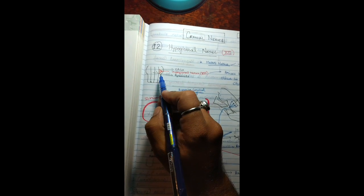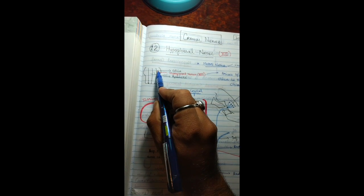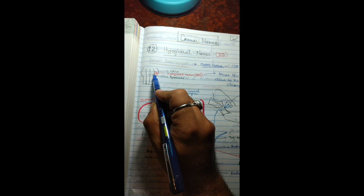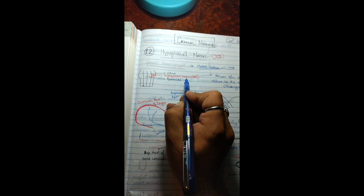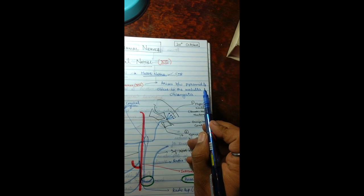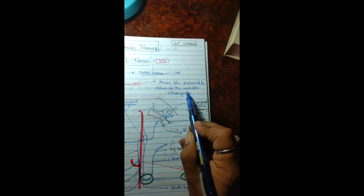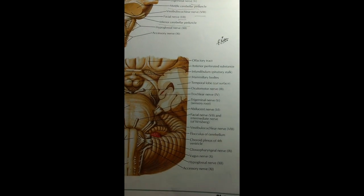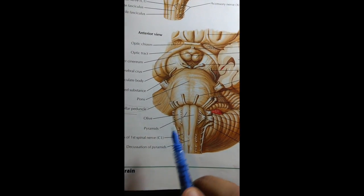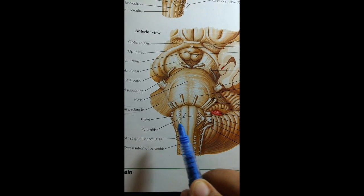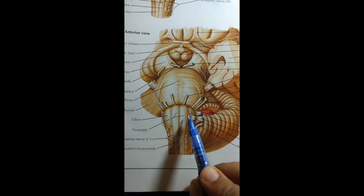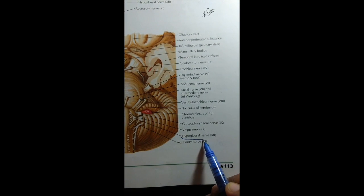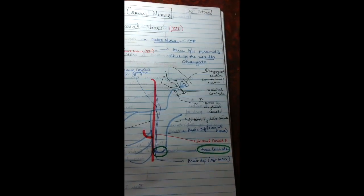Now we will learn where the hypoglossal nerve originates. In the medulla oblongata there are structures known as the olives on the sides and pyramids in the middle. The hypoglossal nerve arises between the pyramid and the olives in the medulla oblongata. As we can see in this diagram, the pyramids are in the middle, the olives are on the lateral side, and in between them we can see the hypoglossal nerve.